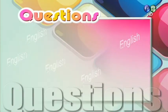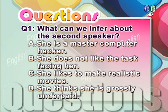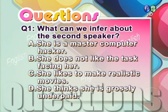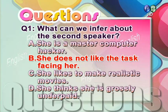好，接着我们要从刚刚的英文会话内容里面挑一些选择题出来。Question 1: What can we infer about the second speaker? A. She is a master computer hacker. B. She does not like the task facing her. C. She likes to make realistic movies. D. She thinks she is grossly underpaid. 答案是 B — She does not like the task facing her.